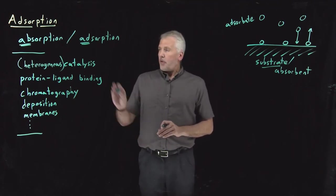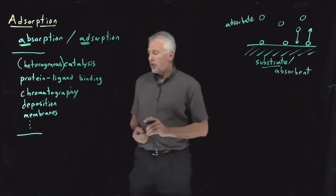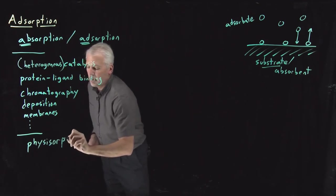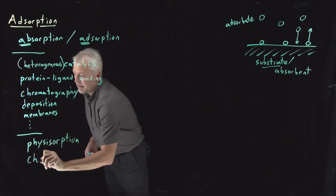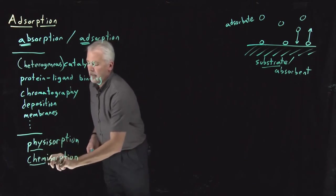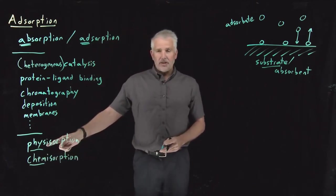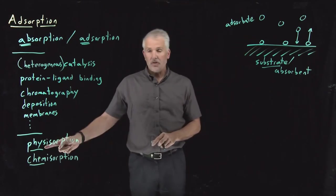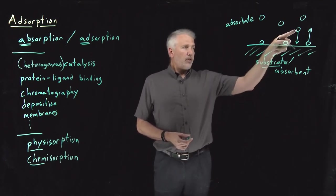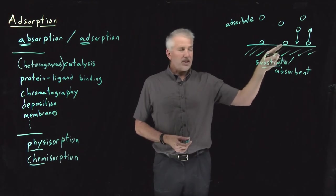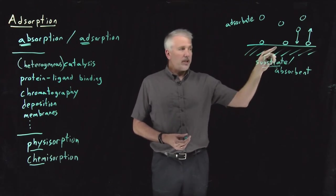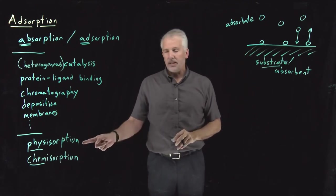A few other vocabulary words: some terminology related to adsorption. It's often important to distinguish between two types of adsorption — physisorption versus chemisorption. The difference between those is whether the interactions that give rise to the adsorption are physical or chemical. For example, where some molecule sticks to the surface perhaps with van der Waals interactions or a polar attraction between the surface and the molecule, and can desorb without any chemical change to the molecule, that would be an example of physisorption.